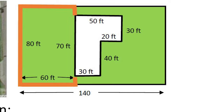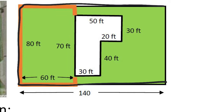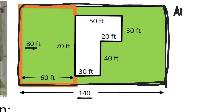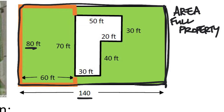Looking at this lawn, what I want to do to find the area of the lawn is look at the full property — that's this big rectangle I put in black here. They did give us both dimensions of that: it's a 140 by 80 foot rectangle. To find the area of the full property — and it's important to know it's the full property — I'm going to take those two dimensions and multiply them: length 140 times width 80.